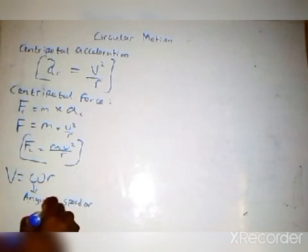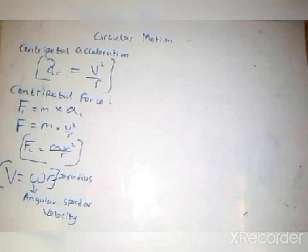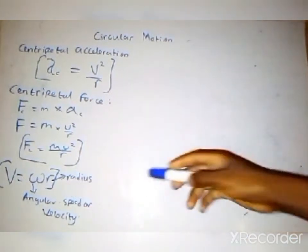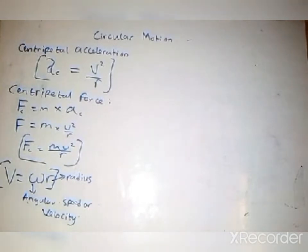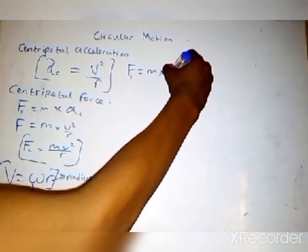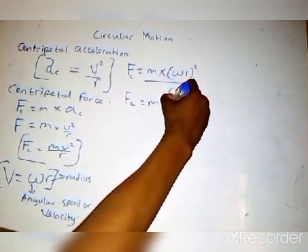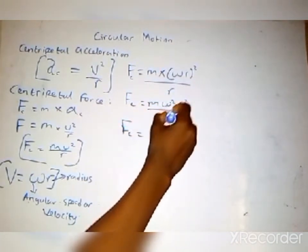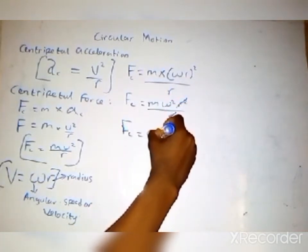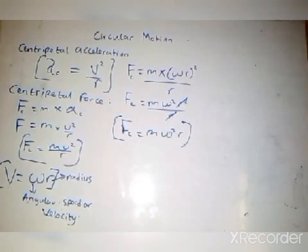Here v is the linear velocity. Now let's derive something by substituting v = ωr into the centripetal force equation. The centripetal force Fc equals mass times (ωr) squared over r, which simplifies to mass times ω squared times r. So our centripetal force can be expressed as either mv²/r or mω²r depending on what we are given.